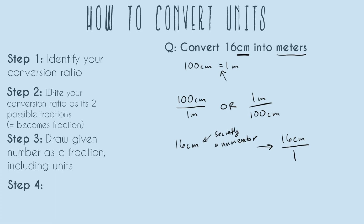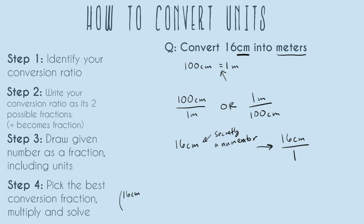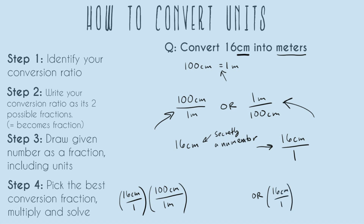Now that we have all our prep work done, we're ready to do the actual problem. Step four: pick the best conversion fraction, multiply and solve. We have our 16 centimeters over one, and we can multiply it with either of our two conversion fractions. So let's set up both options: 16 centimeters over one times 100 centimeters over one meter, OR 16 centimeters over one times one meter over 100 centimeters. One of these is going to be correct and one is going to be wrong.